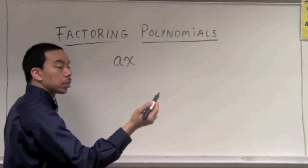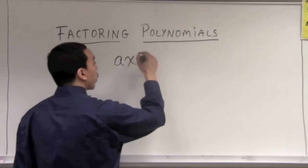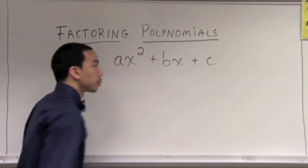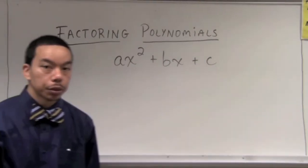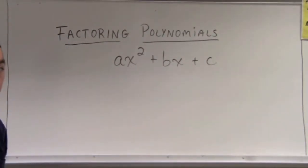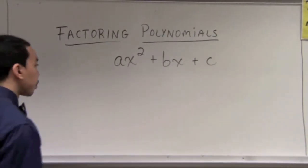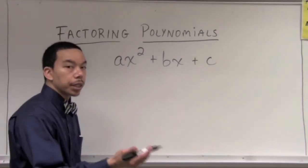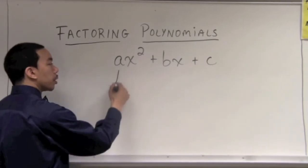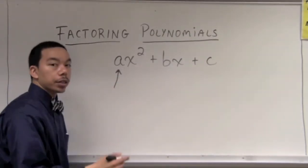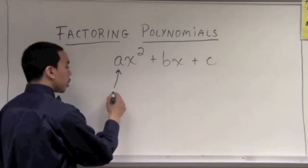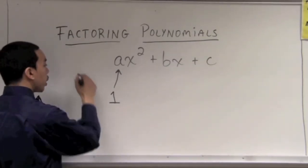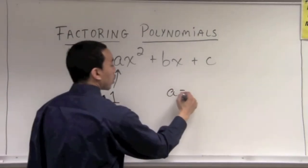The quadratic expression will be in the form of ax squared plus bx plus c. This is a polynomial we're used to in the form of ax squared plus bx plus c. When we talk about the leading coefficient being equal to 1, we're talking about the coefficient in front of the x squared — that is a 1, so a is equal to 1.